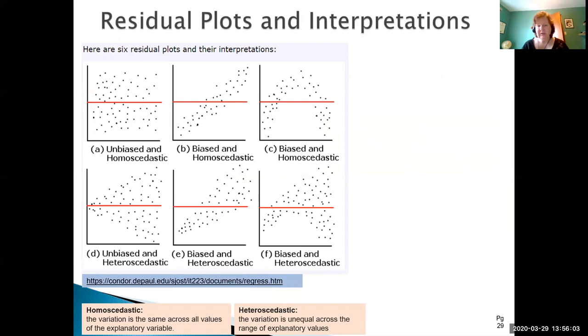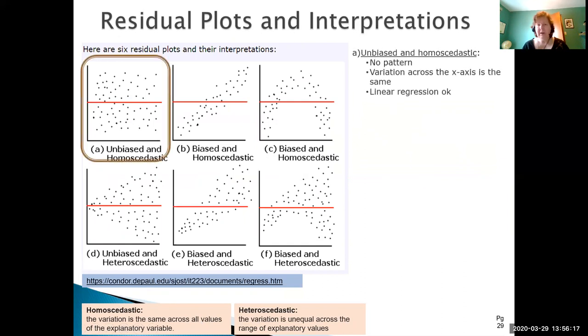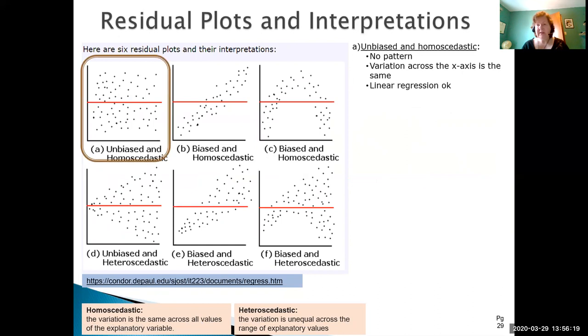Let's take a look at a number of different graphs. These are from condor.paul.edu so giving him his credit for this. There's some definitions for some of the heavy-duty statistical terminology he uses. But let's go through each of these results. So this one is called unbiased and homoscedastic. We can see here that there's no pattern. No pattern at all and the variation across the x-axis is pretty consistent. So in that case linear regression would be appropriate.